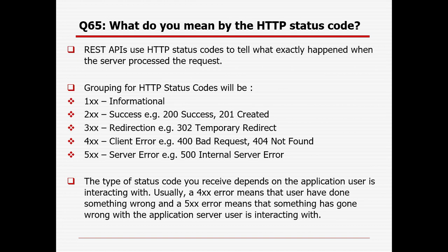What do you mean by HTTP status codes? REST APIs use HTTP status codes to tell what exactly happened when the server processed the request. Grouping them: codes starting with 1xx are Informational; starting with 2xx means Success (e.g., 200 is Success, 201 is Created); starting with 3xx means Redirection (e.g., 302 is Temporary Redirect); starting with 4xx means Client Error (e.g., 400 Bad Request, 404 Not Found); and starting with 5xx means Server Error (e.g., 500 Internal Server Error).